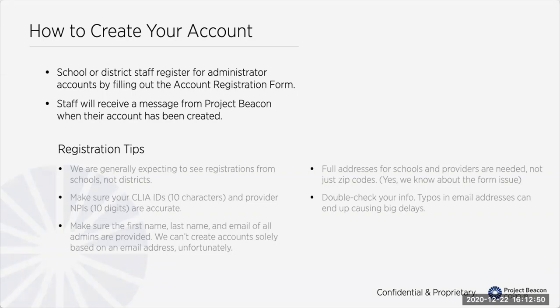There are two types of IDs you need to enter into the form. First is the CLIA ID — make sure what you're sending us is 10 characters, usually two numbers, a letter, and then seven numbers. Provider NPIs need to be 10 digits — make sure those are accurate. When you fill out the form, make sure you're providing the first name, last name, and email of all the admins you need in the system. If you just give us an email address, we can't create an account — our system really needs a first and last name to accompany that.